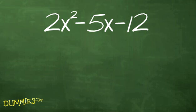In the example 2x² - 5x - 12, the value of a is 2. The only way to multiply two numbers together to get 2 is 1 times 2.